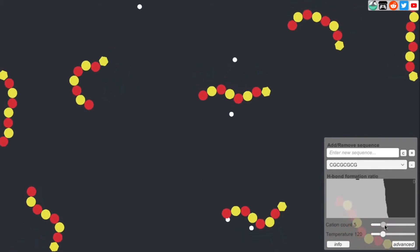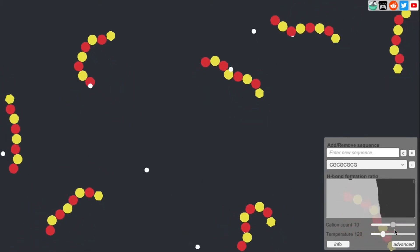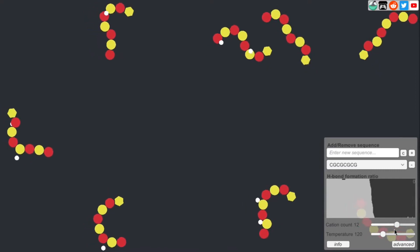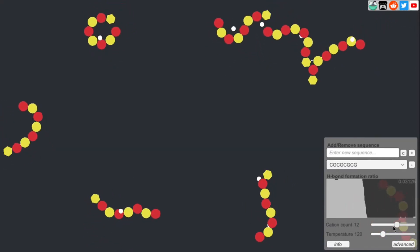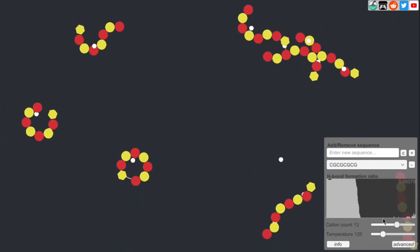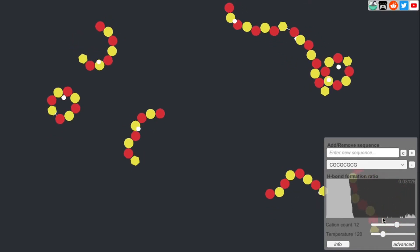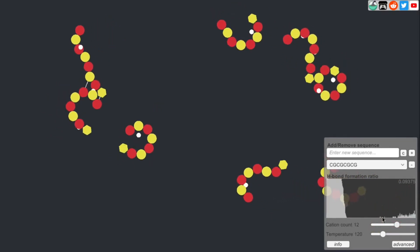Now if you add them back, you will see that first the cations find the DNA, and then they will help them overcome the effect of the phosphate repulsion and they will come together to form duplex DNA.